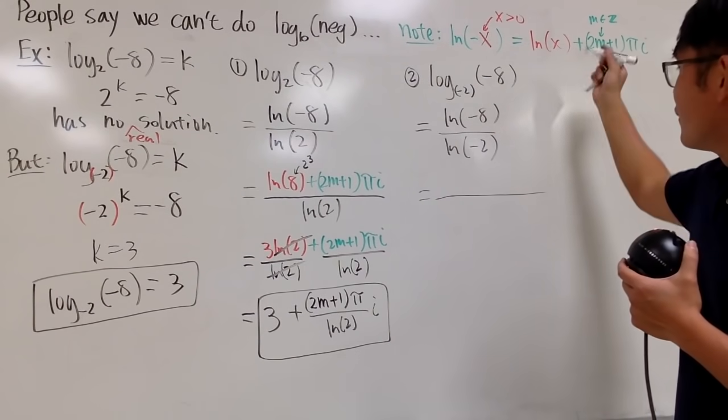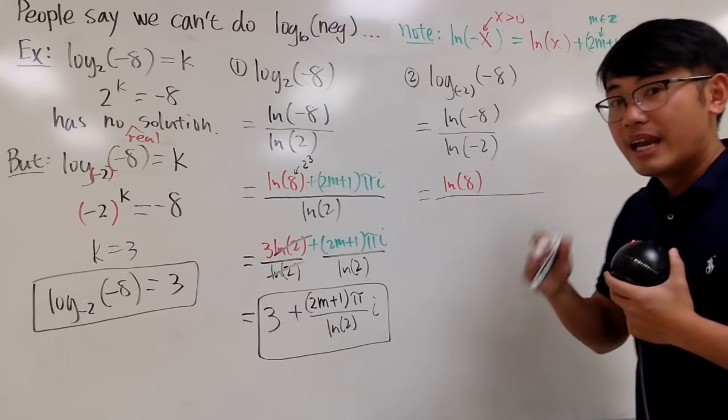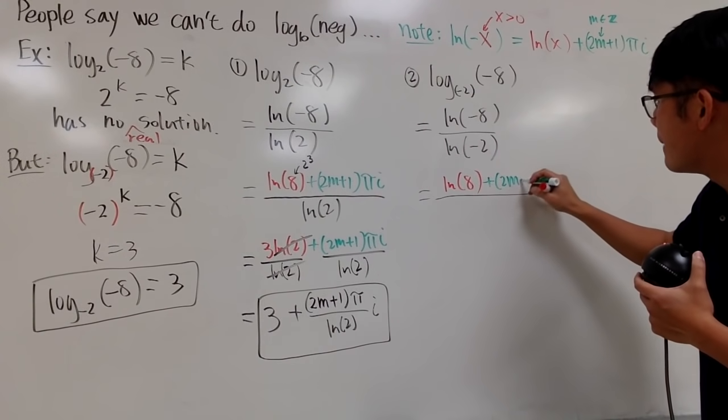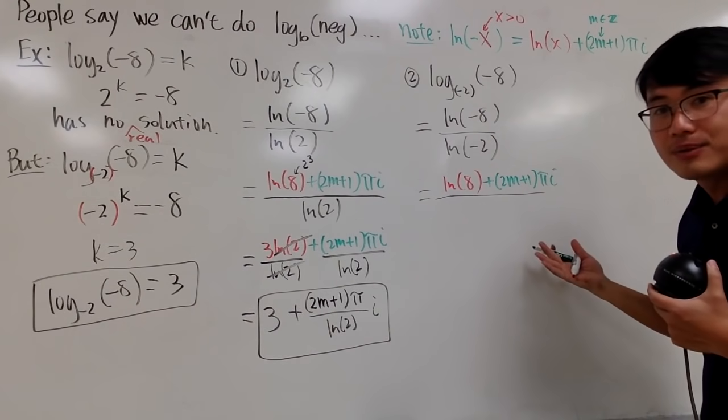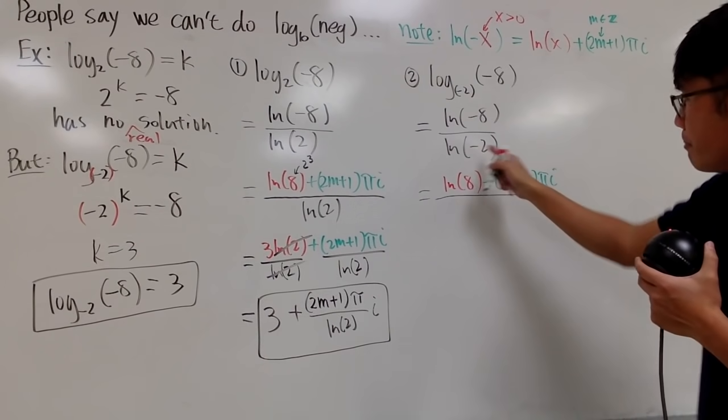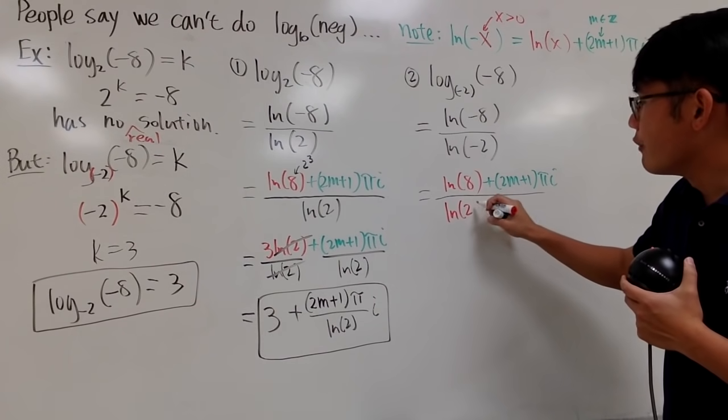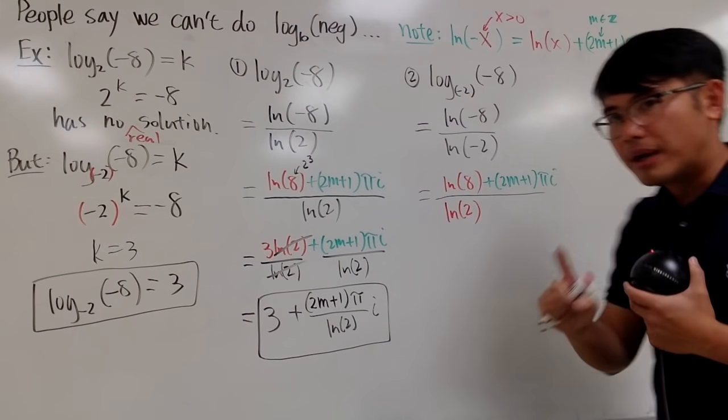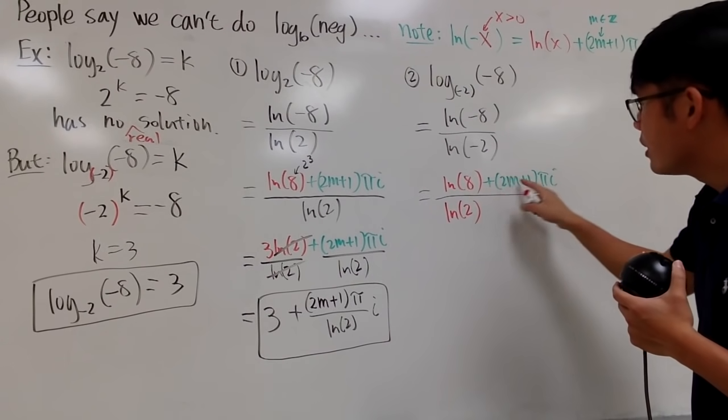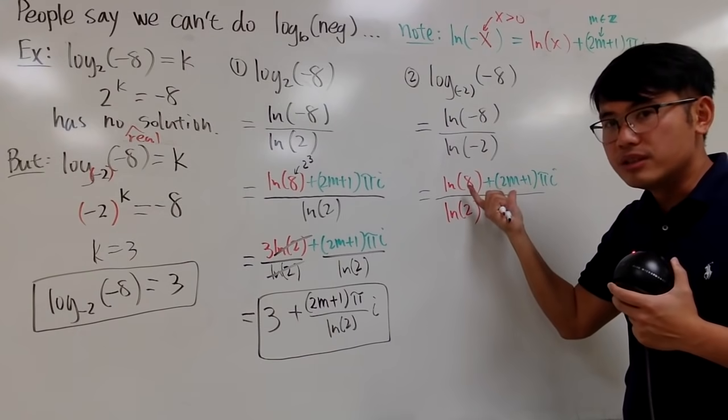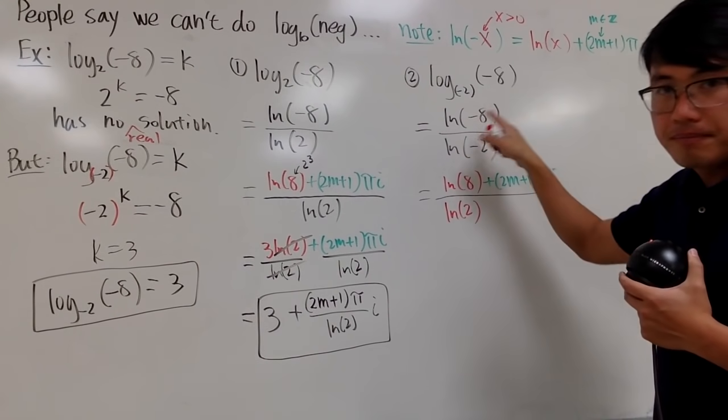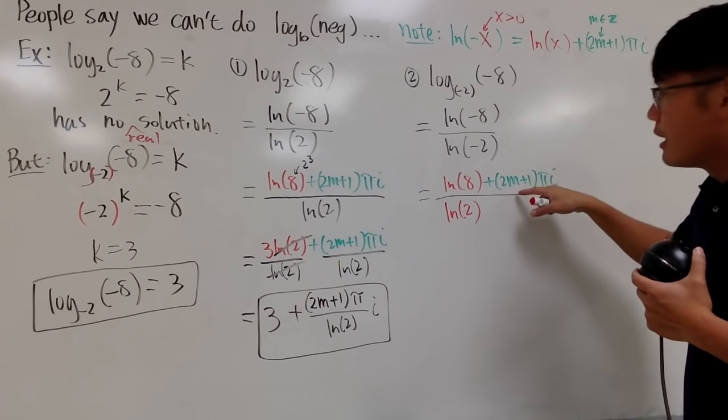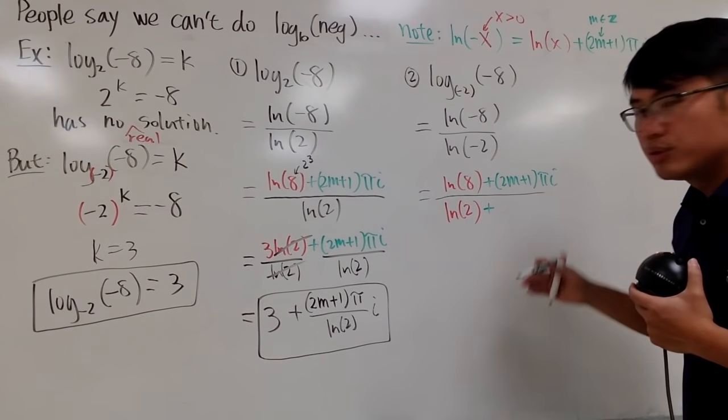And, this, we first get ln of 8. And then, plus this part, plus 2m plus 1 pi i. Like this. And then for the bottom here, we will also write down ln of 2. And then, plus this part as well. But, here's the issue. On the top here, you have a set of solutions. And this is infinitely many solutions for that. Use m, because m is just any integers. On the bottom here, you cannot use m again.